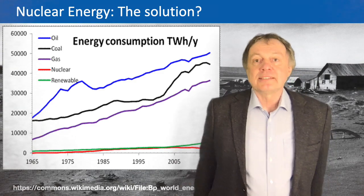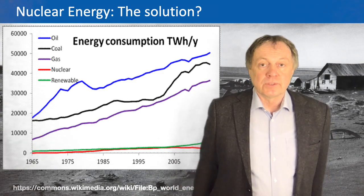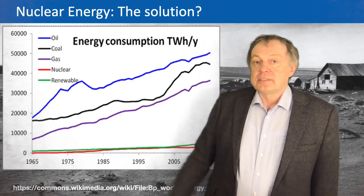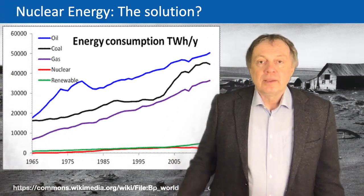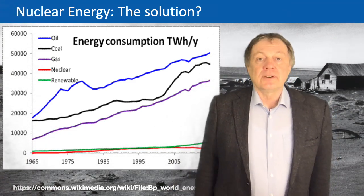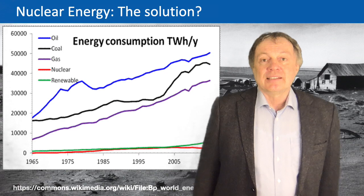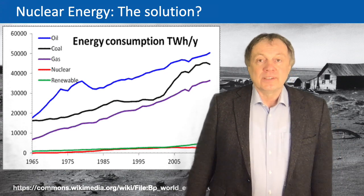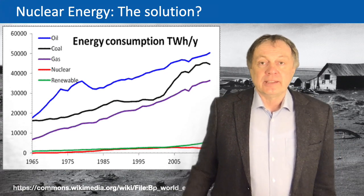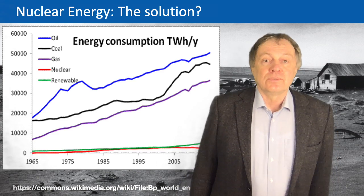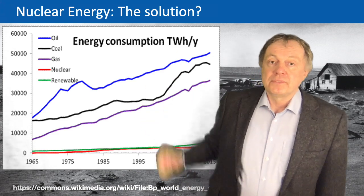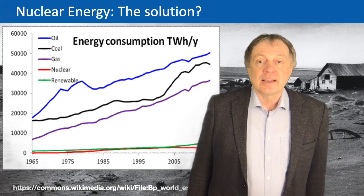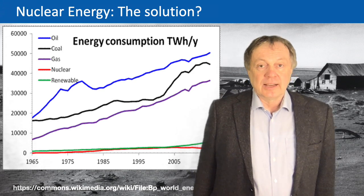As I told you last time, we have 80% fossil fuels on our world. The unit here is terawatt hours per year. If you want to convert it to gigawatt as I did last lecture, you have to know how many hours there are in one year. If you sum up the curves, you come to about 18,000 gigawatt, which I gave you last time.